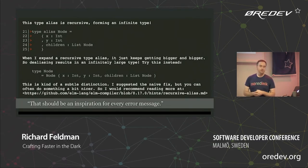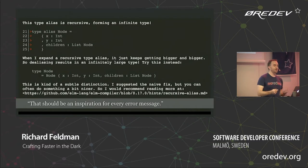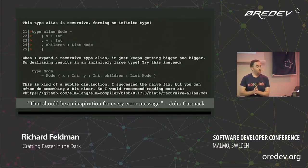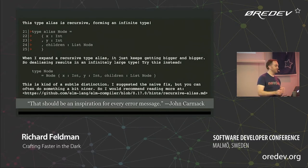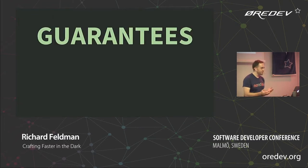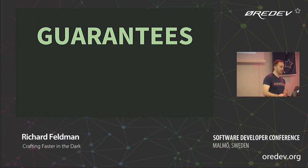That error message was said by John Carmack to be an inspiration for every error message — and he's seen quite a few error messages in his time. So really, at the end of the day, the fundamental thing that Elm is all about is guarantees about what your program can do. The compiler checks everything.